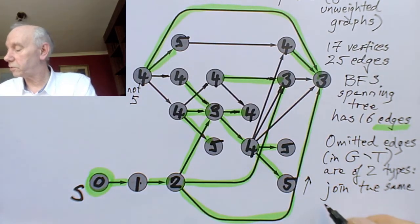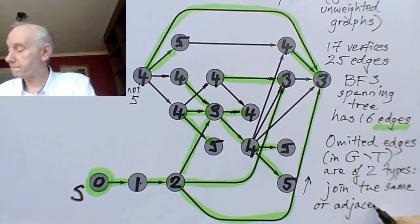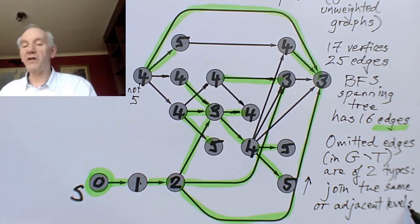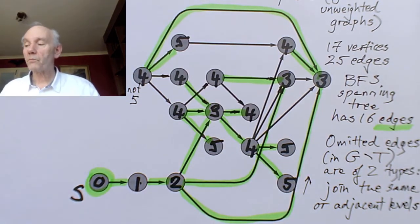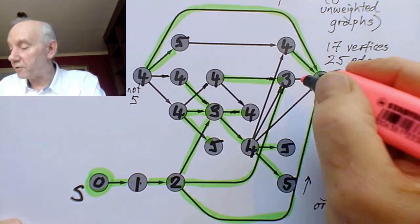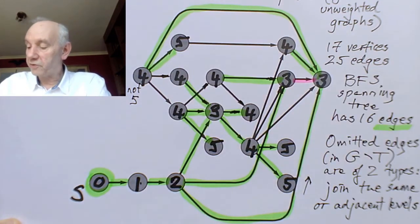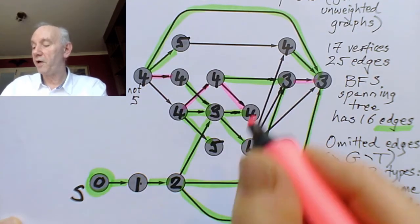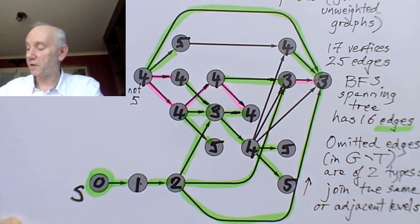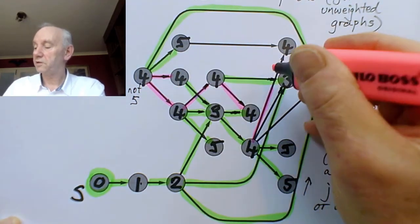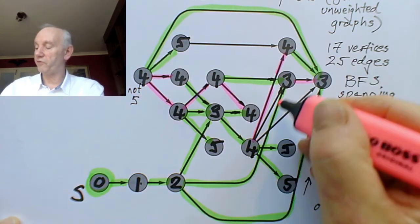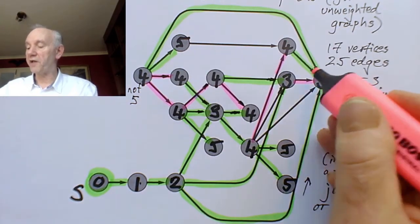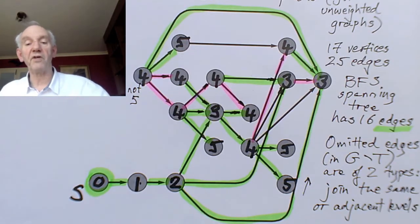The omitted edges connect either adjacent levels of the tree or vertices at equal levels. So they link either equal numbers — like 3 goes to 3, or 4 goes to 4 — or they link adjacent numbers, like 4 and 5. Here's a 4 to 4, and 4 and 5. There's a 3 and a 4, there's a 3 and a 4, and there's a 4 and a 5 — that's 3, 4, 5, 6, 7, 8, 9 — there are our 9 edges. So you see there are two types.